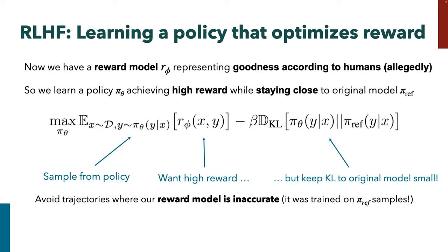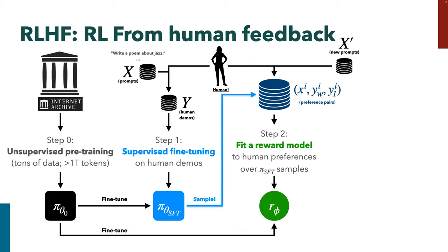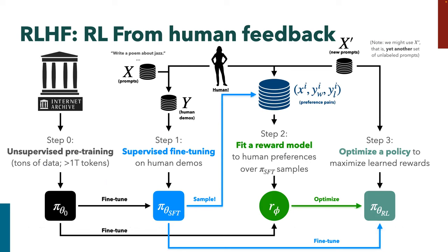Now that we have this whole objective, we optimize it with PPO. I don't know if people are familiar with PPO — it's an RL algorithm; you don't have to use PPO, but that's what John Schulman decided and therefore that's the world we live in. That basically finishes our pipeline for RLHF: unsupervised pre-training, SFT, fit the reward model, then take a dataset of unlabeled prompts, do RL with the reward model, and we end up with a policy — and that's basically ChatGPT.